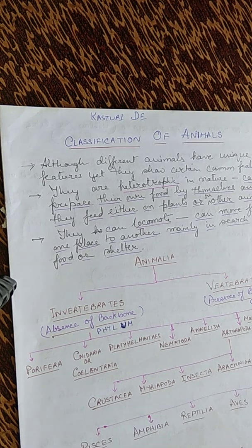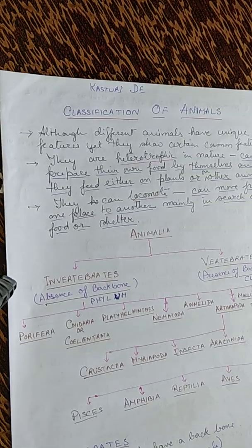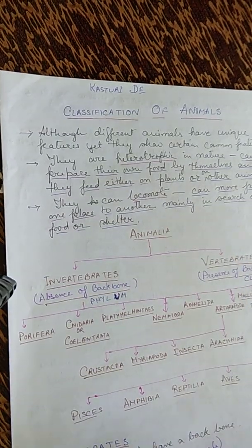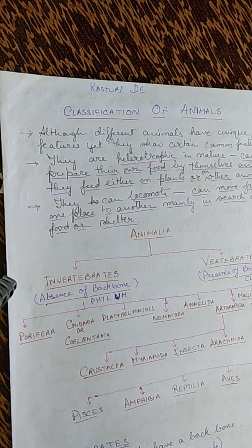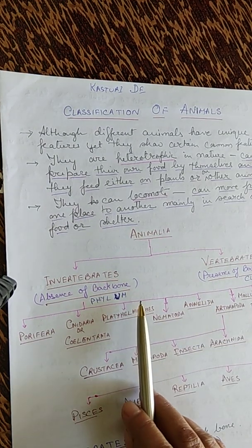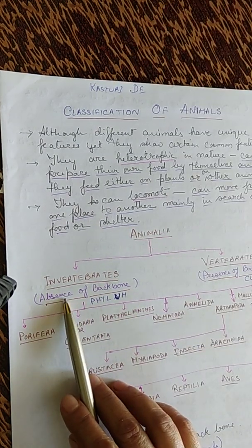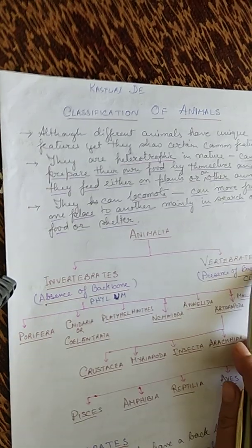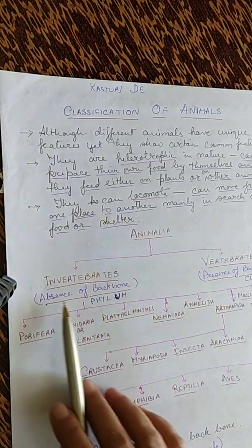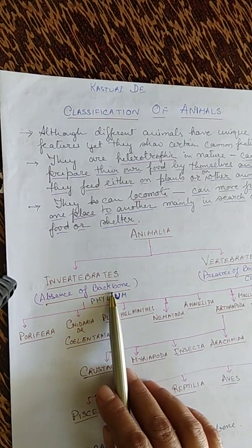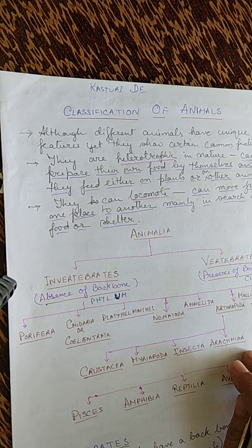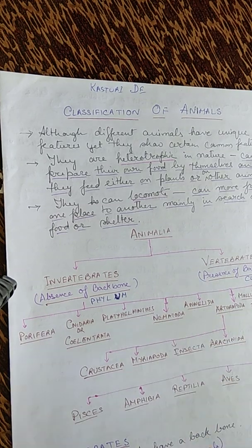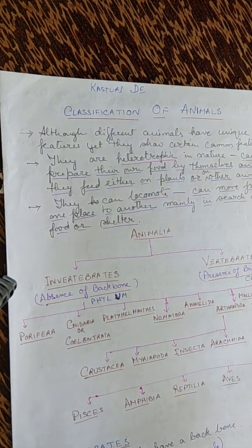The Kingdom Animalia is divided into two subgroups: invertebrates and vertebrates, according to the absence or presence of a backbone. In invertebrates, the backbone is absent, while in vertebrates, the backbone is present.